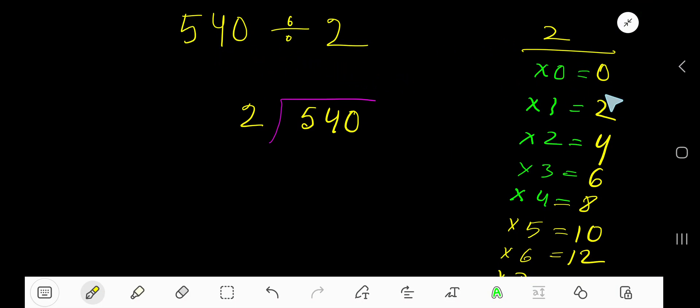540 divided by 2. 2 times 0 is 0, 2 times 1 is 2, 2 times 2 is 4, 2 times 3 is 6, 2 times 4 is 8. Just add to the previous step: 0 plus 2 is 2, 2 plus 2 is 4, 4 plus 2 is 6.